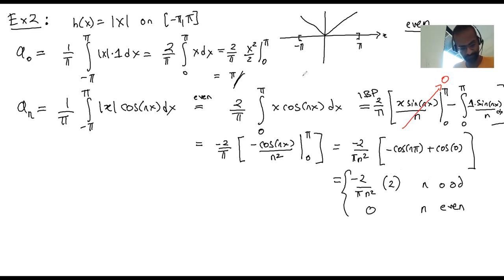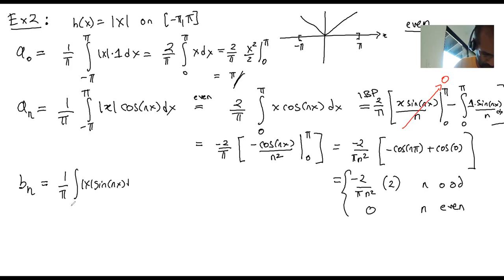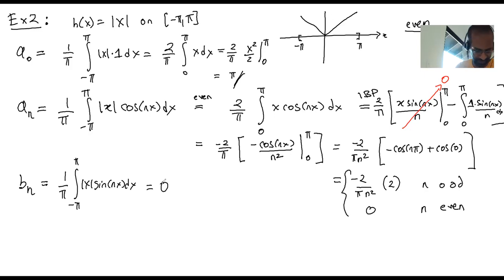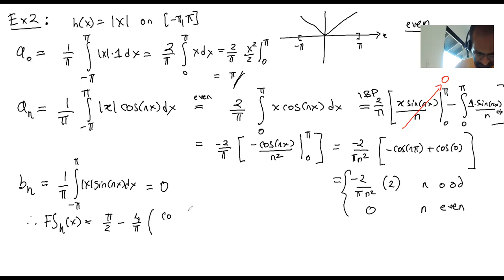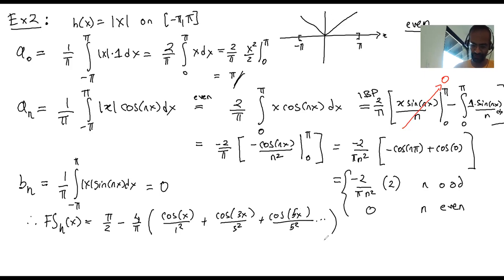What about the sine coefficients b_n? Since h(x) = |x| is an even function and sine is odd, their product is odd, so all sine coefficients are zero. Therefore the Fourier series of h(x) is: π/2 − (4/π)(cos x / 1² + cos 3x / 3² + cos 5x / 5² + ...). Now the question is: what does this series have to do with the original function?